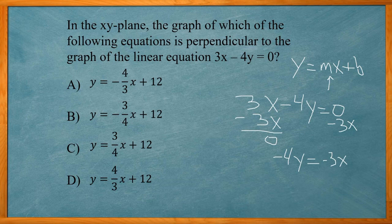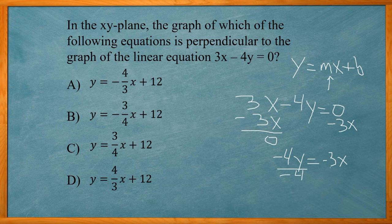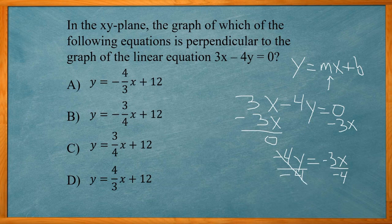That leaves me with negative 4y equals negative 3x. Now I get the y by itself. I'm going to divide by negative 4 on both sides. That's going to end up giving me a positive 1 here, going to cancel out the 4, just y.